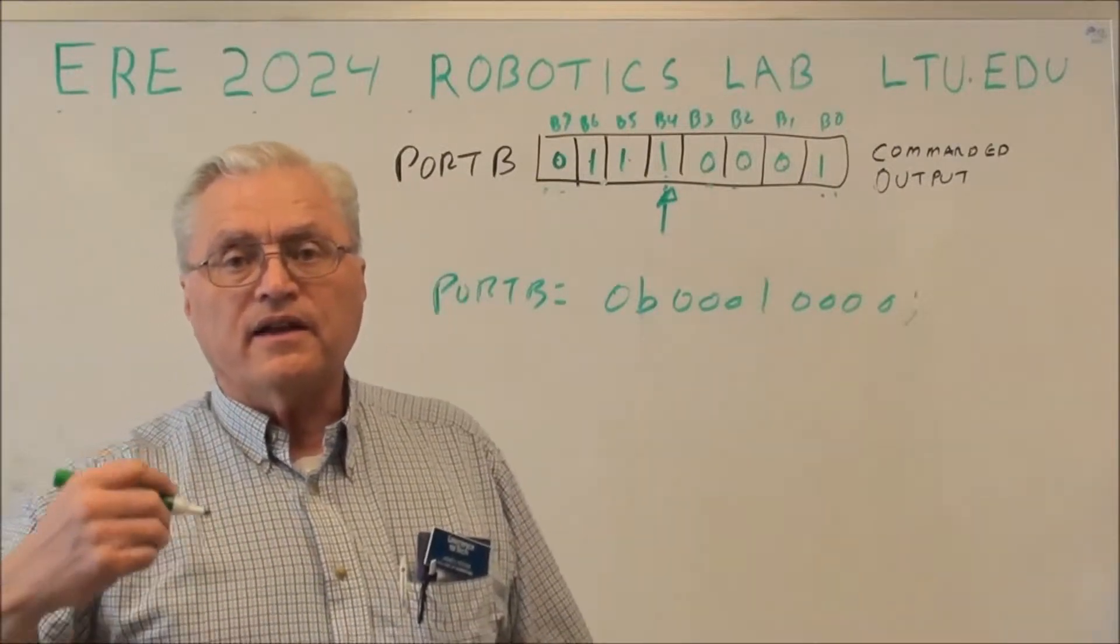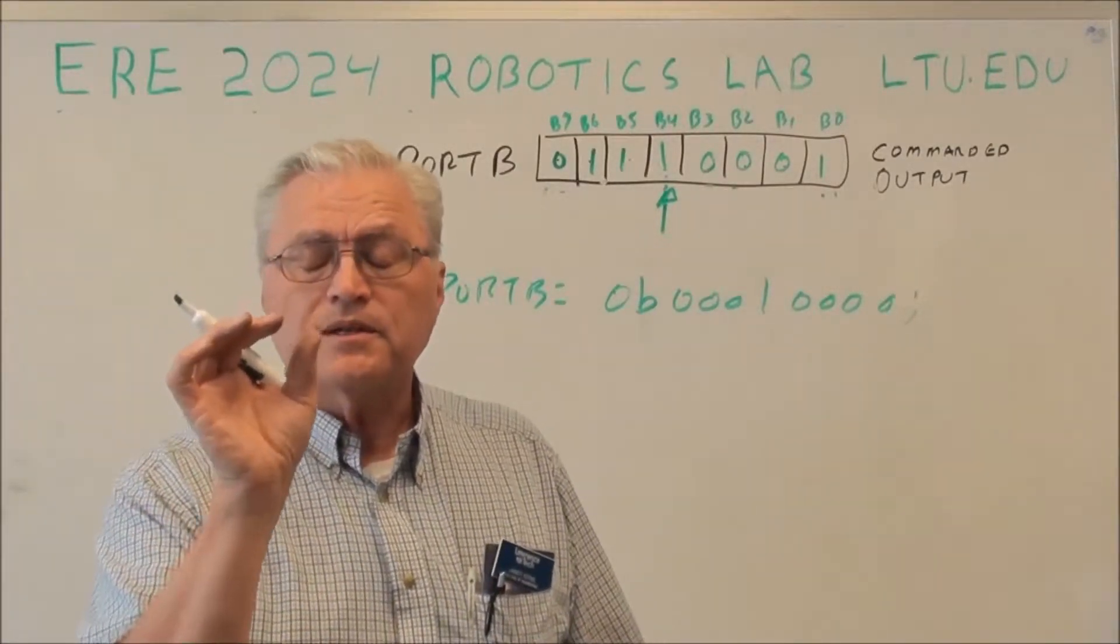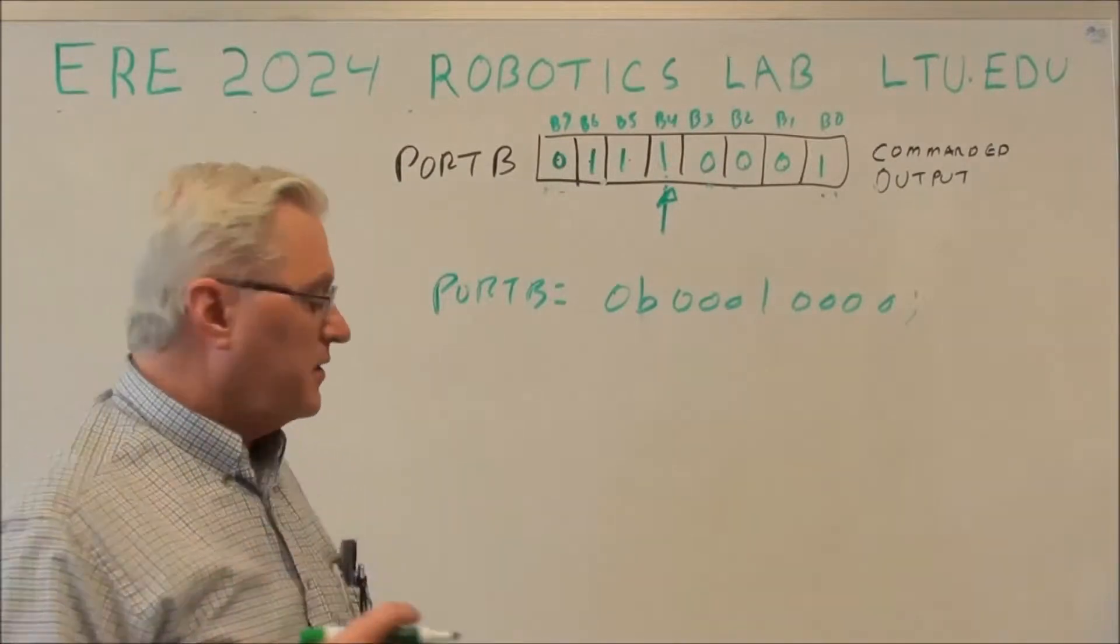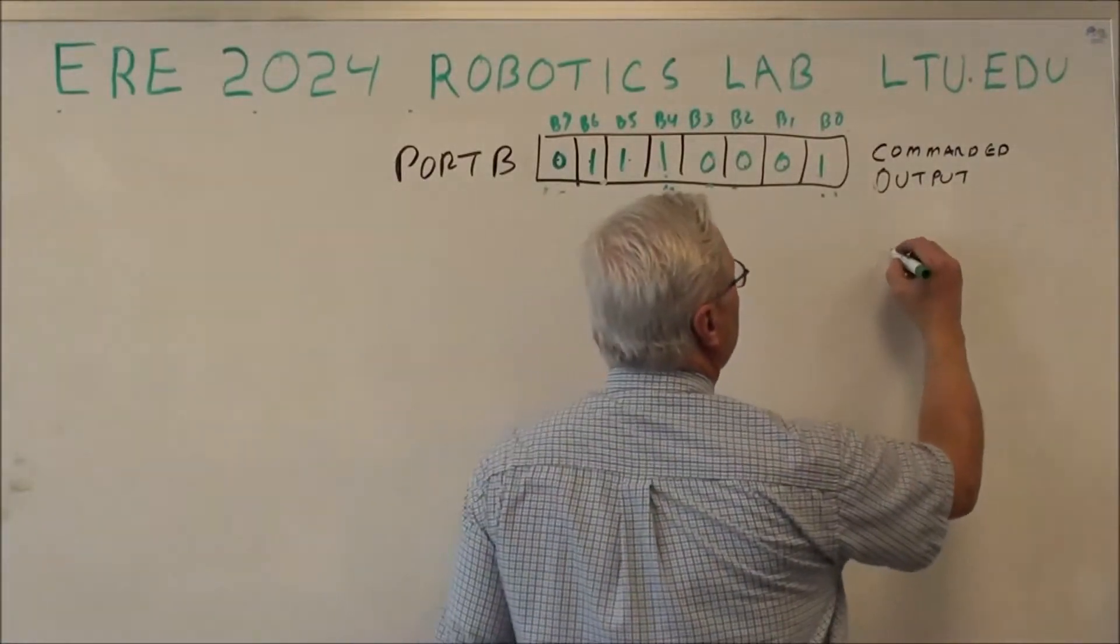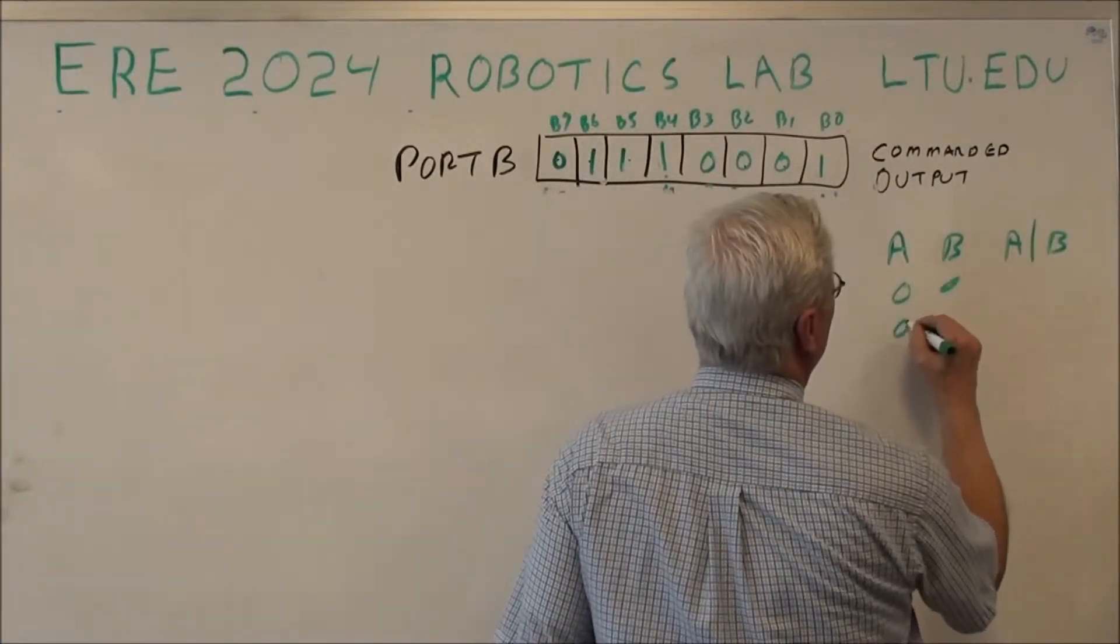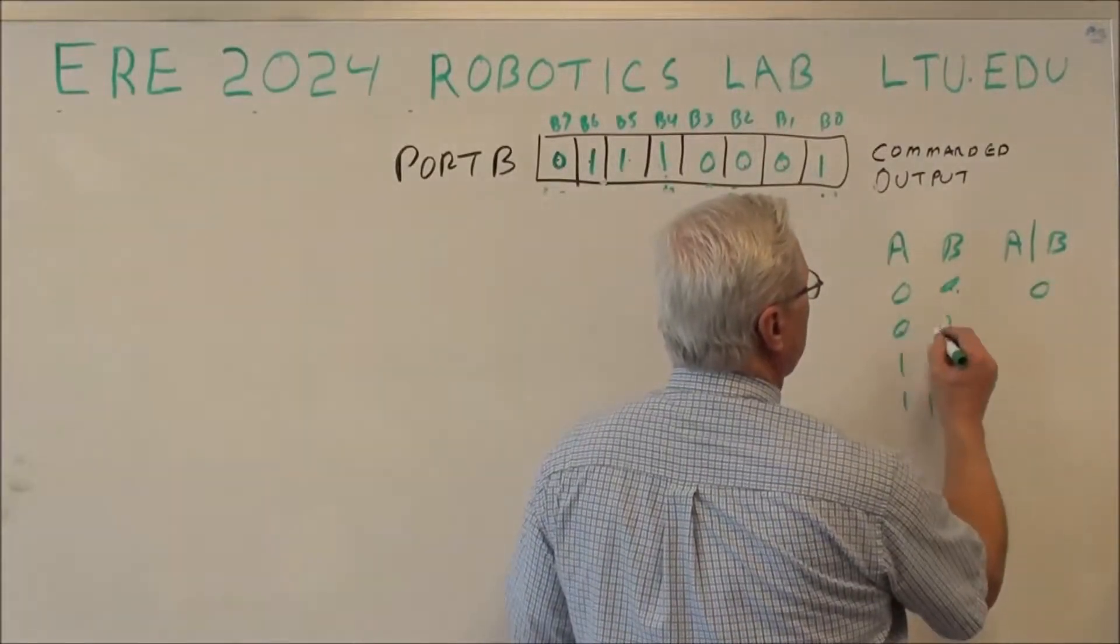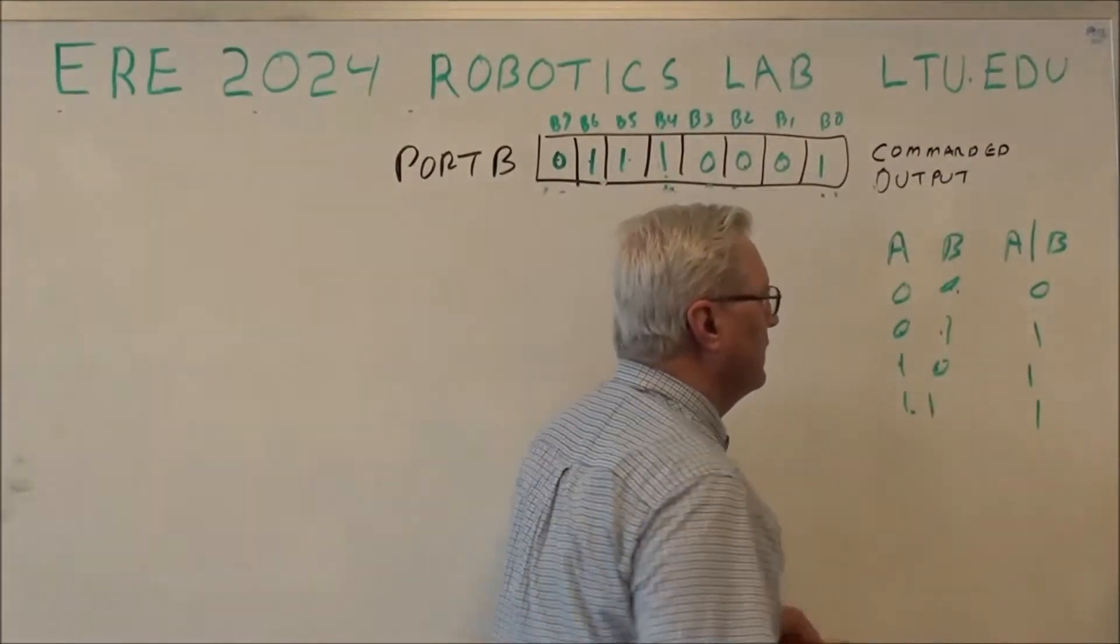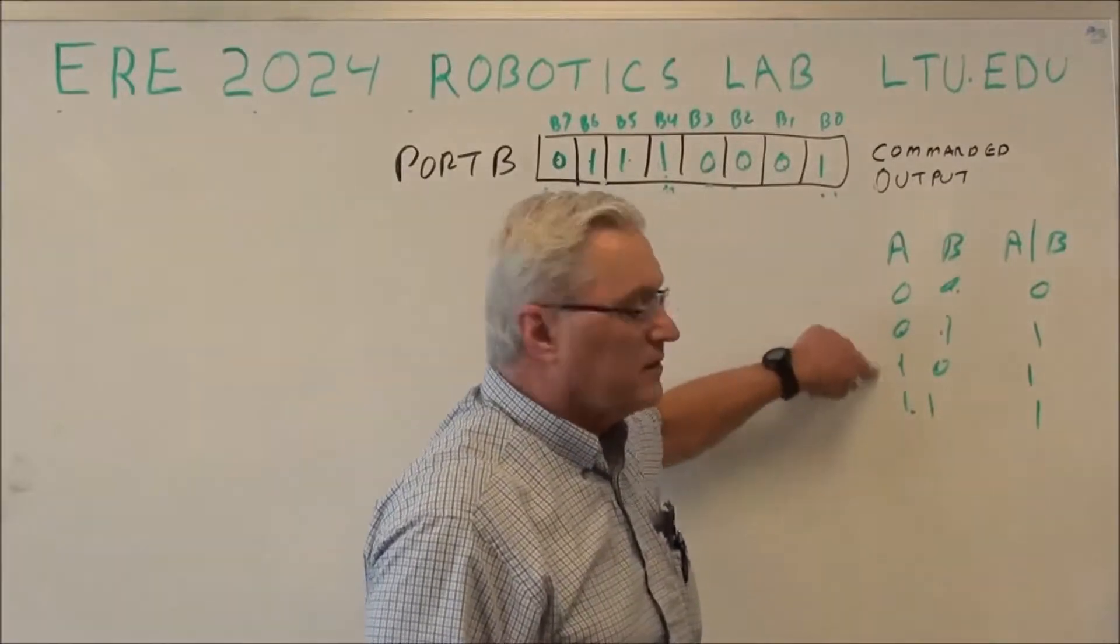What we want to do is find a way to assign a value to a particular bit in that byte without disturbing the other ones. Well to do that, one way we can do that is use an OR. Now if you remember, my truth table for an OR, if I have an input A and input B, my output A or B: 0, 0 is 0; 0 or 1 is 1 because at least one of them is 1; 1 or 0 is 1; 1 or 1 equals 1. So I can OR something with a 1 and I'll end up with a 1 as long as at least one of them is 1.